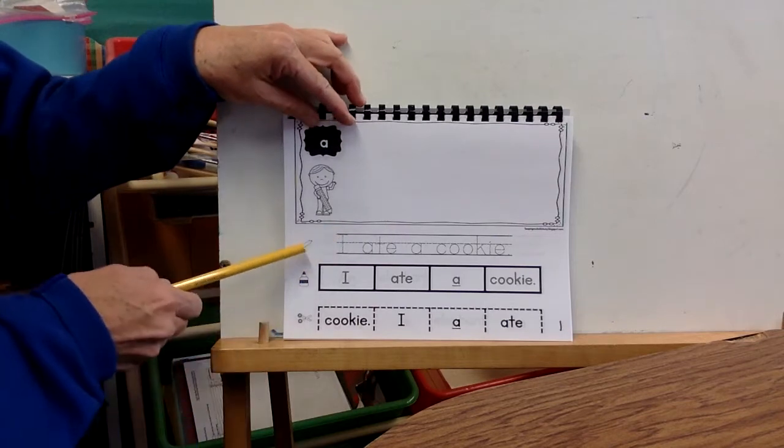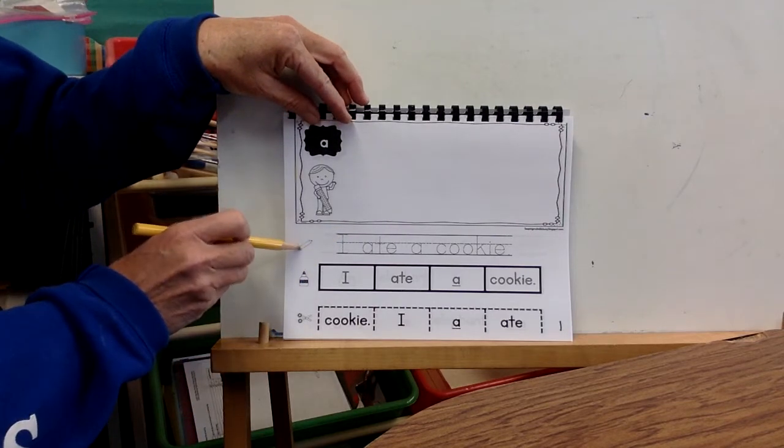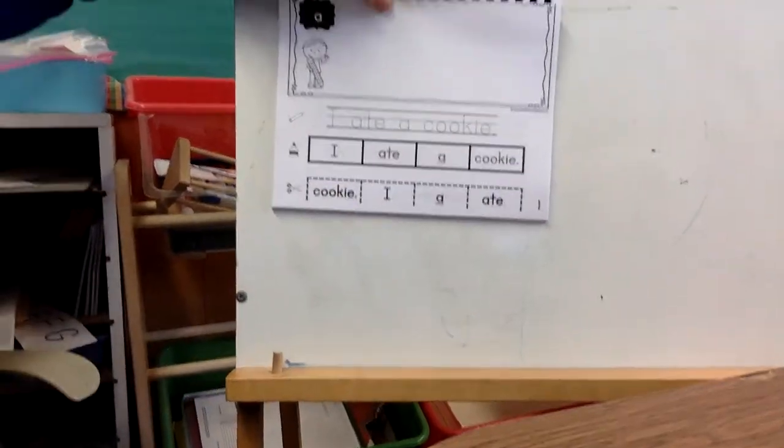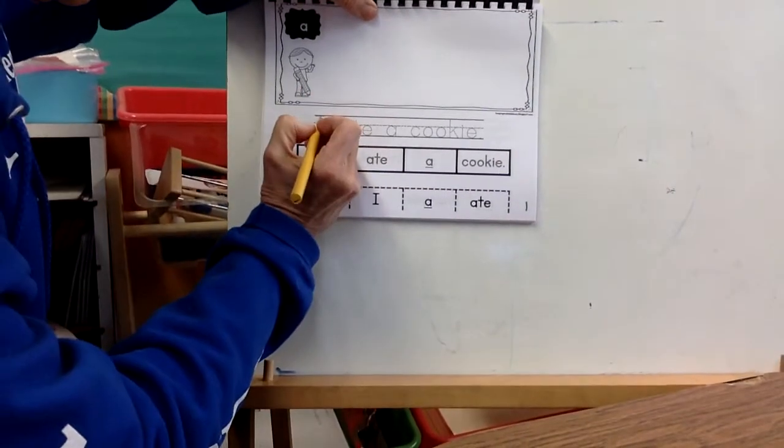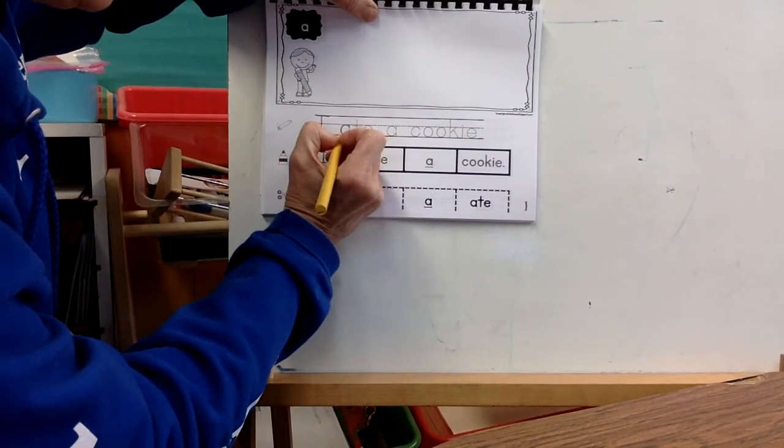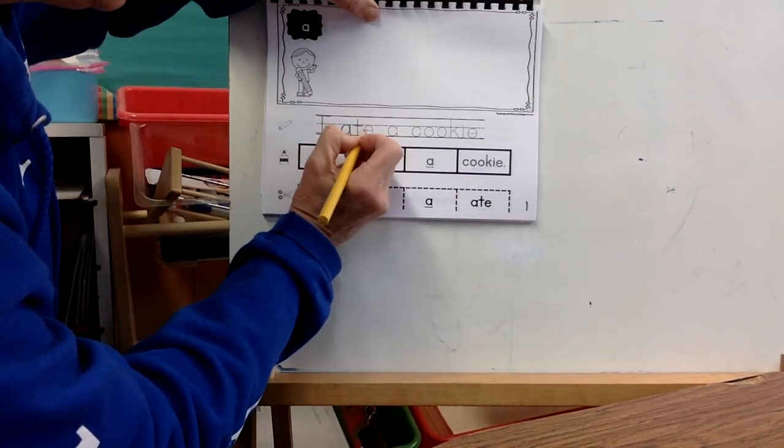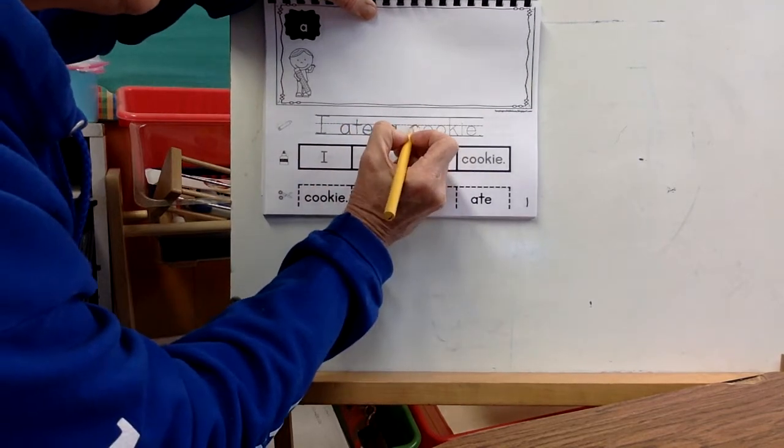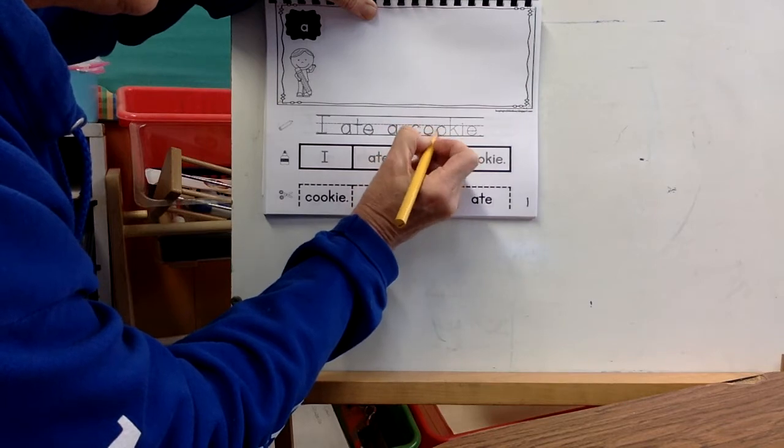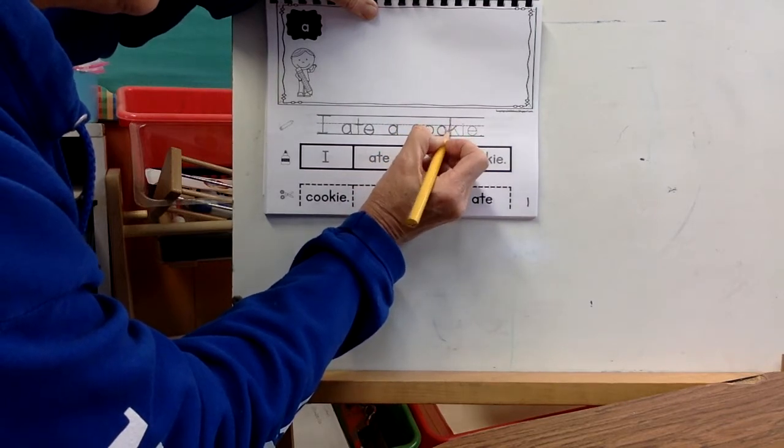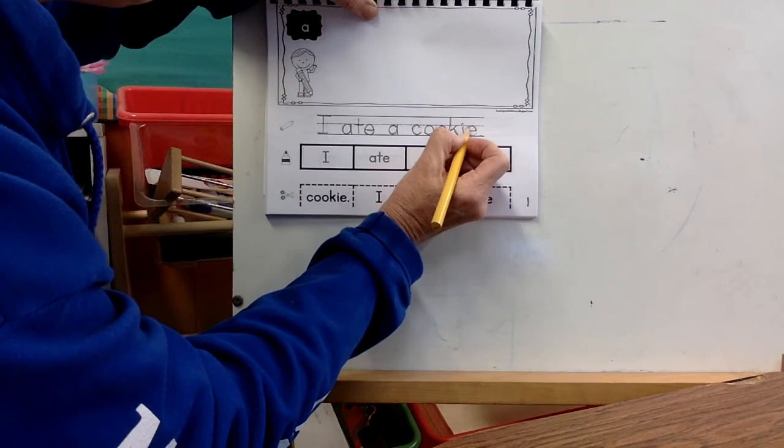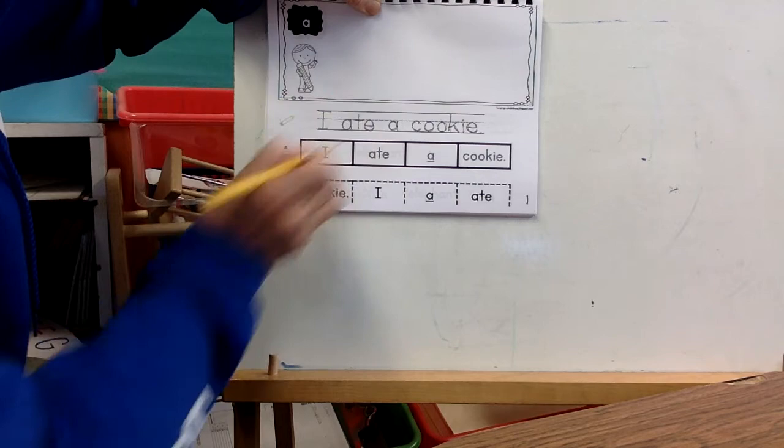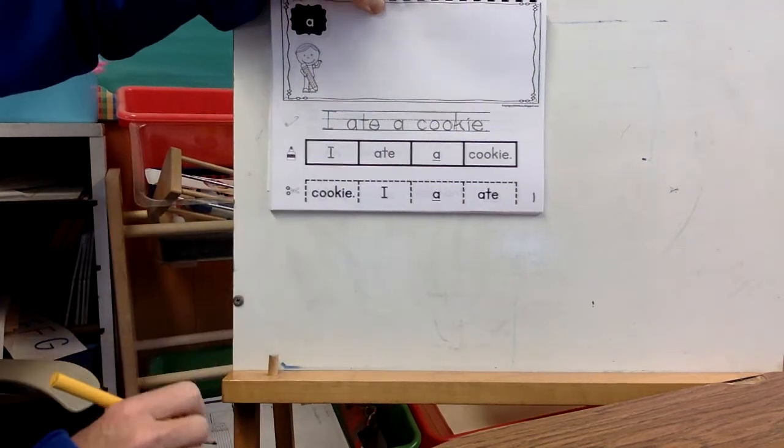Now you're going to use a pencil. Do you see the little pencil picture on the side? You're going to trace the letters. It's written in dots. So now I'm going to trace those letters. I ate, trying to stay on the dot the best I can. A cookie. Remember, letters never start at the bottom and go up. They always start near the top of the letter. So that's the first thing you do.